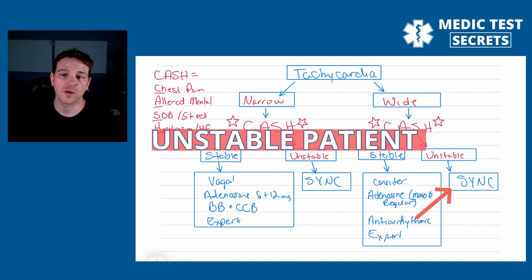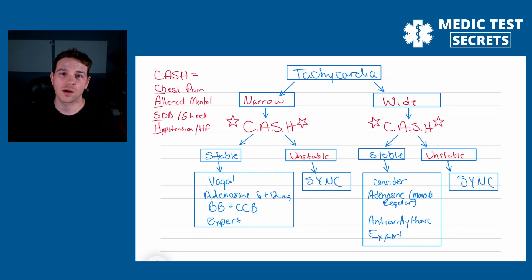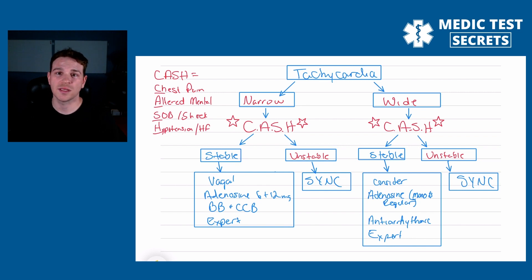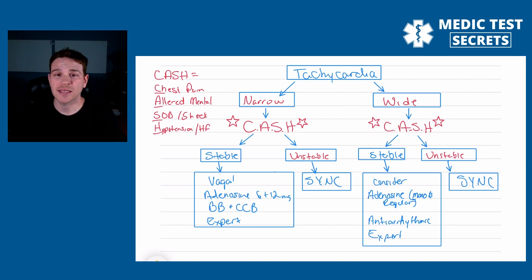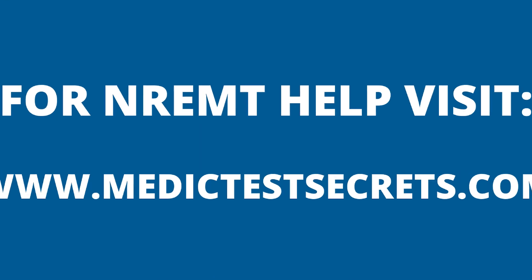For me, looking at it this way is a little bit easier to understand than looking at the ACLS algorithm itself. Just make sure you know the process you have to walk through from patient contact: ABCs, IV access, a 12-lead, high-flow oxygen if necessary — all that stuff. You want to have that step-by-step process. If you are having trouble with ACLS, cardiology, or anything preparing for your paramedic psychomotor exam, leave a comment and let me know what you're struggling with and subscribe to the channel for more videos.